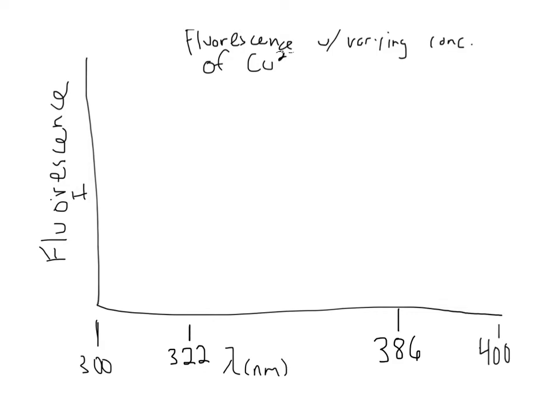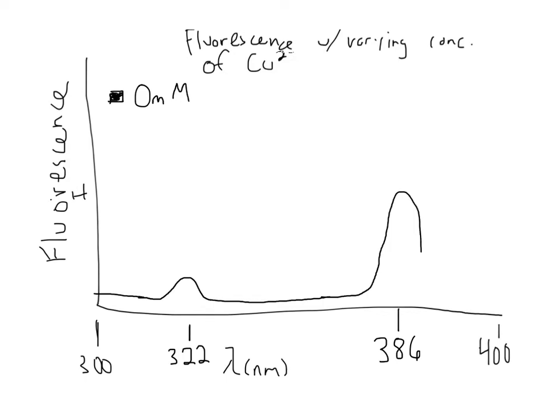This question asks us to sketch the fluorescence of a compound that has a donor and an acceptor in it. The first part asks for us to sketch it without copper. The donor is going to be absorbing most of the energy, and since they have an interaction, the donor will give a lot of its energy over to the acceptor. So the donor emits a small amount at 322 nanometers, and then it gives a lot of that energy to the acceptor, which emits light at 386 nanometers — a much larger signal at 386 nanometers.